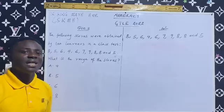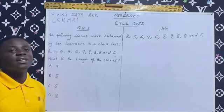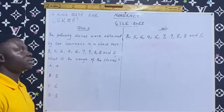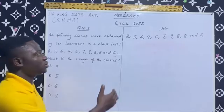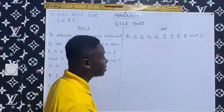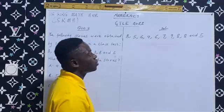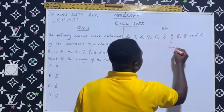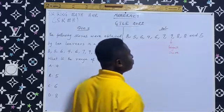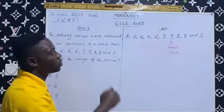First of all, let's identify the largest score from this data set. By observation, you can see that the largest score is 9.